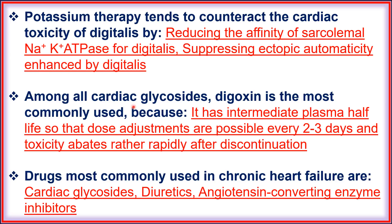Among all cardiac glycosides, digoxin is the most commonly used because it has an intermediate plasma half-life, so that dose adjustments are possible every 2-3 days and toxicity abates rather rapidly after discontinuation.